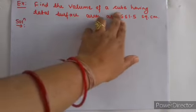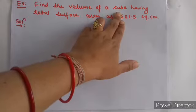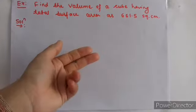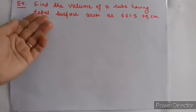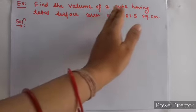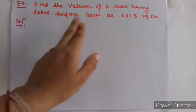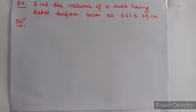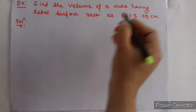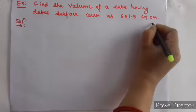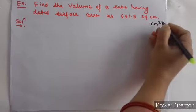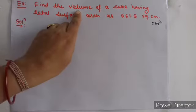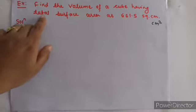So find the volume of a cube, and total surface area of a cube — ऐसे दो अलग-अलग examples previous lecture में हमने देखे थे. यहाँ पे उसका mixture है. Find the volume of a cube having total surface area as 661.5 square centimeter. तो यह centimeter square भी लिख सकते हैं या फिर square centimeter भी. तो अभी हमें यहाँ पे find करना है volume of a cube, and given है total surface area.